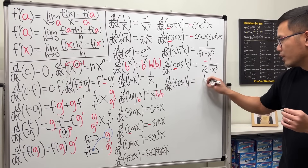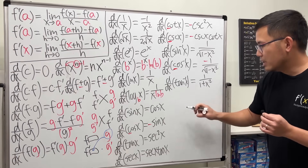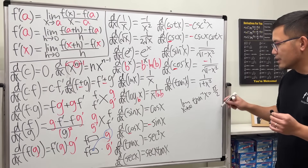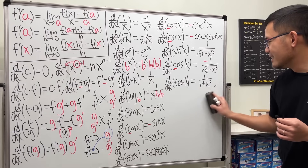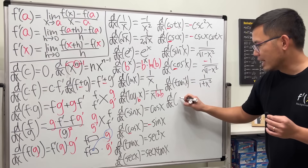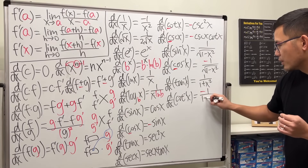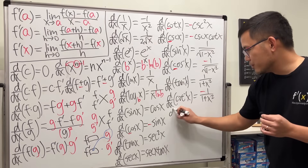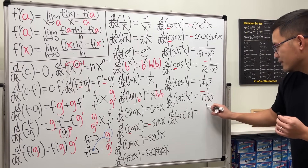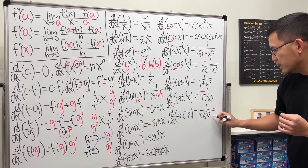For inverse trig, you only need to know three and the other three come free. The derivative of arcsin(x) is 1 over the square root of (1 minus x squared). One goes first, then minus x squared — because the domain of arcsin is from negative 1 to 1, and the endpoints are not differentiable. The derivative of arccos(x) is the same thing but negative — because cosine starts with 'c.' The derivative of arctan(x) is 1 over (1 plus x squared), and its domain is all real numbers.